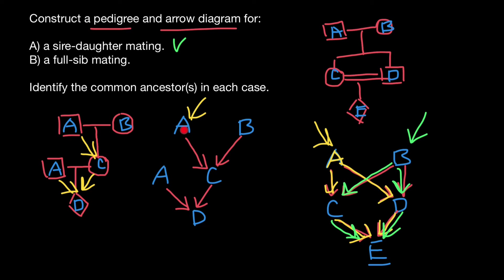By the way, let me show you a more simplified version of this arrow diagram. In the simplified version, we have individual A, individual C, and individual D. Individual A contributes half of the genome to individual C. And individual C, which is the daughter of A, and individual A contribute half of the genome to D. So this is an even simpler version of what we see here. And the common ancestor of D is of course going to be individual A, which contributes from both sides — from his own or father's side, and through his daughter through the mother's side of D.